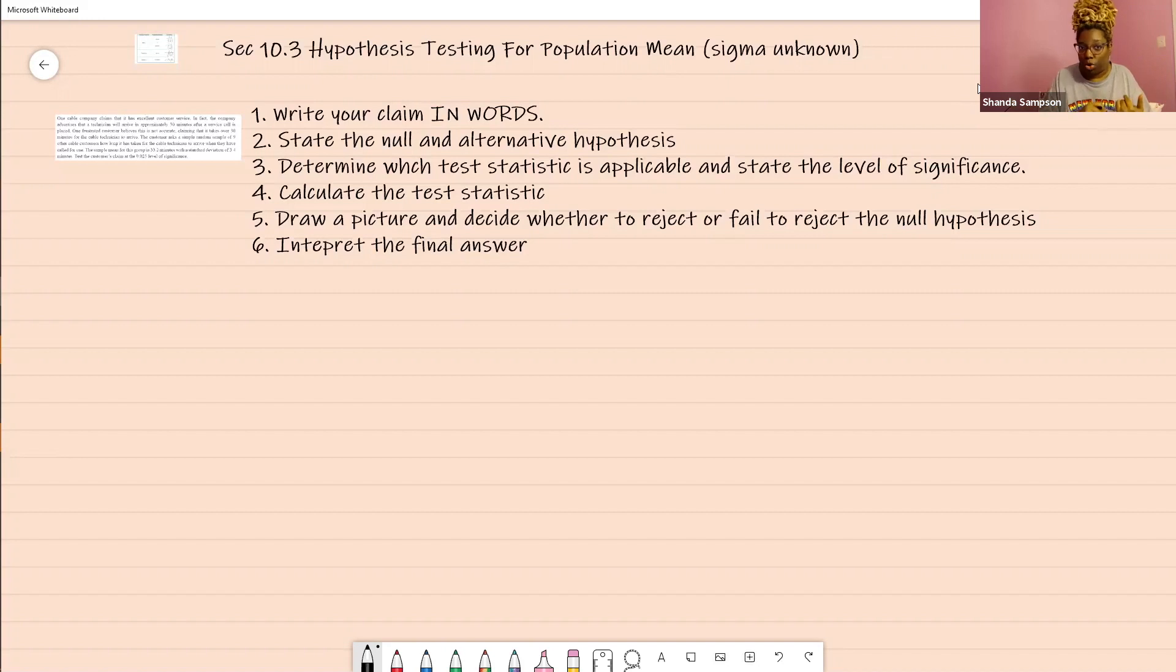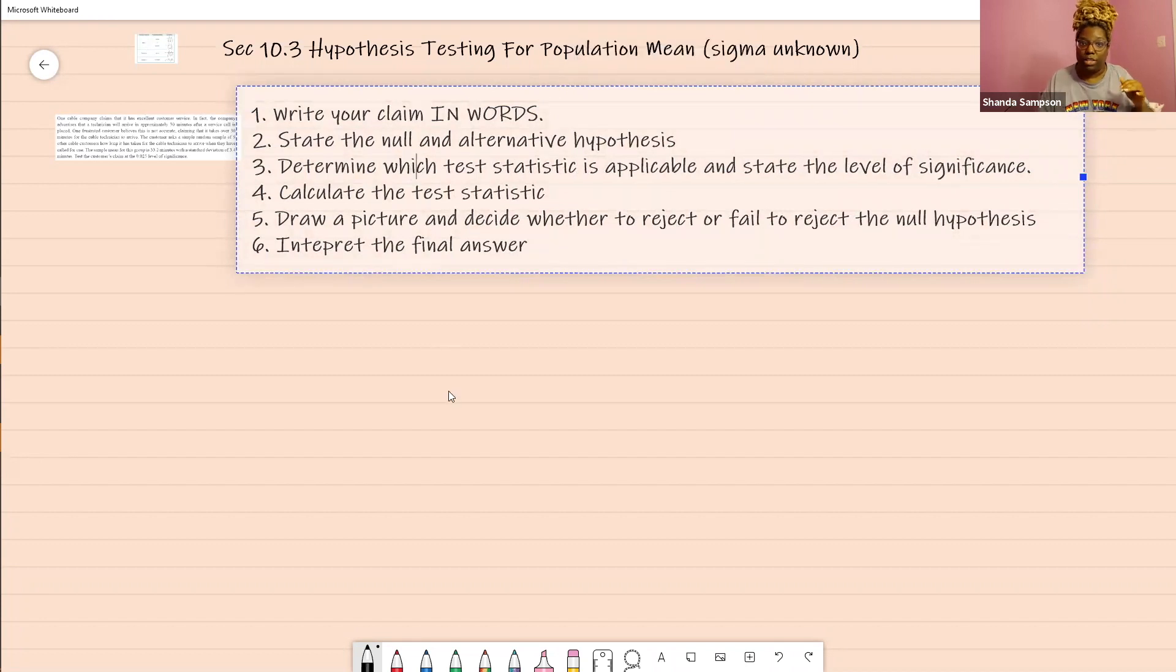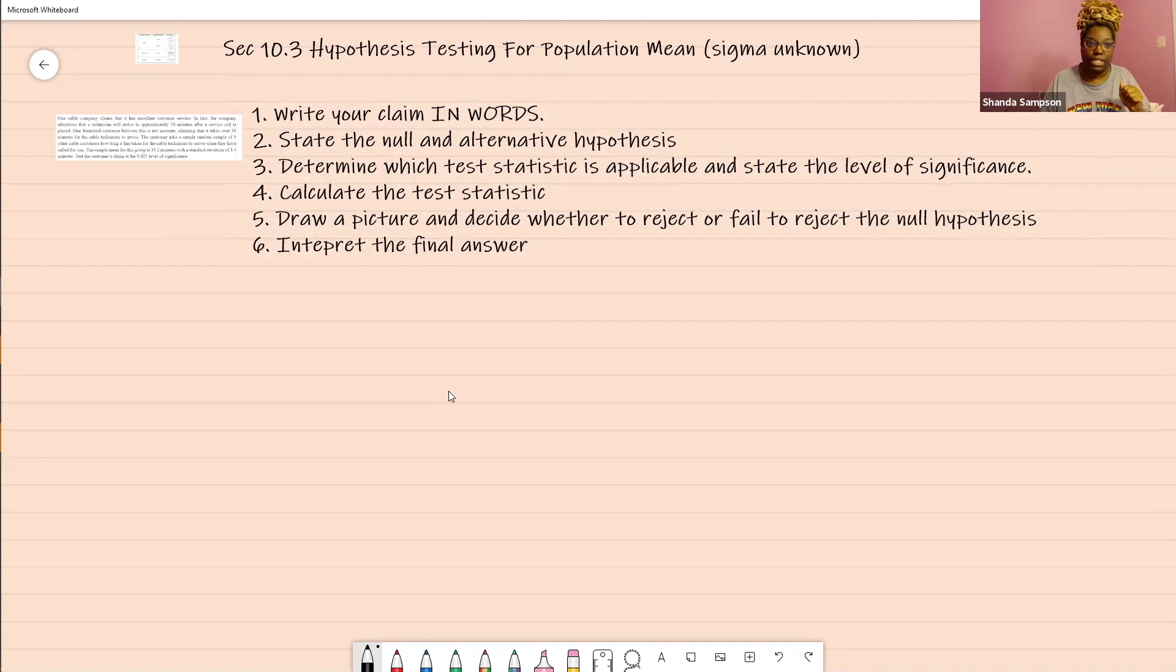First, you're going to write your claim in words. Then you're going to state the null and the alternate hypothesis in symbolic form. Then you're going to determine which test statistic you're going to be looking for. You're going to state your significance level. Calculate your test statistic. Then you're going to draw a picture, decide whether you're going to reject or fail to reject that null hypothesis, and then you're going to interpret your final answer.